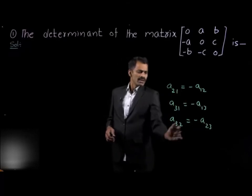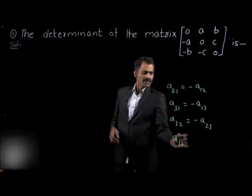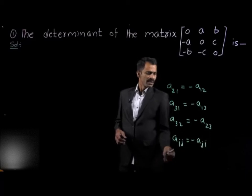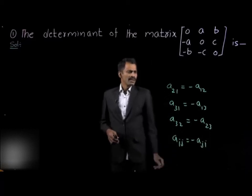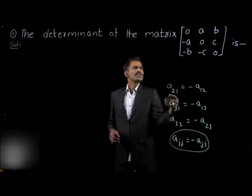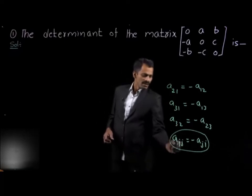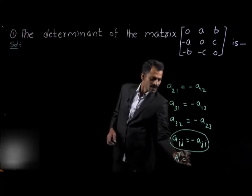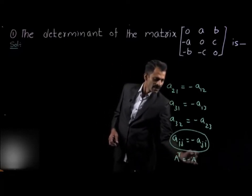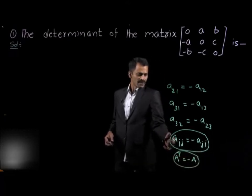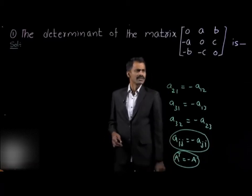In general, this is in the form Aᵢⱼ = −Aⱼᵢ. From this we can say that the given matrix is a skew symmetric matrix. The condition for a skew symmetric matrix is A transpose equal to minus A — that is the matrix notation condition — and Aᵢⱼ = −Aⱼᵢ is the element notation condition.